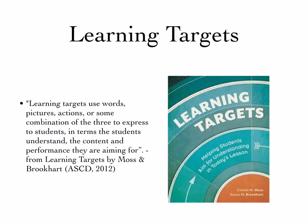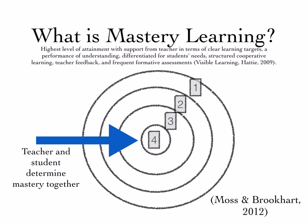What's really key when looking at technology and trying to achieve anything is having learning targets. Connie Moss and Susan Brookhart note that learning targets use words, pictures, actions, or some combination of the three to express to students in terms students understand the content and performance they're aiming for. And that's what mastery learning is — it's trying to hit that mark. What is proficiency? What is mastery? And it's done through a lot of modeling, shared demonstration, guided practice, differentiating the way we teach our content and skills, and having high expectations.